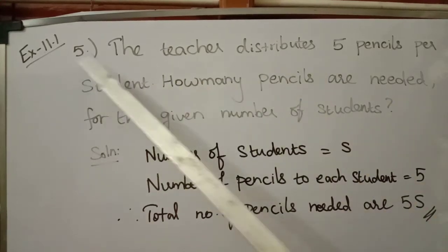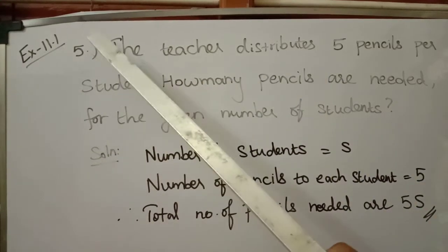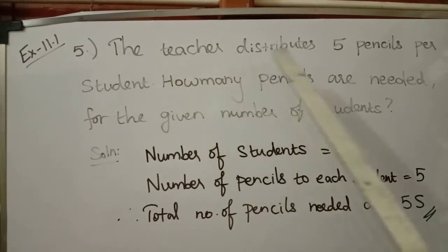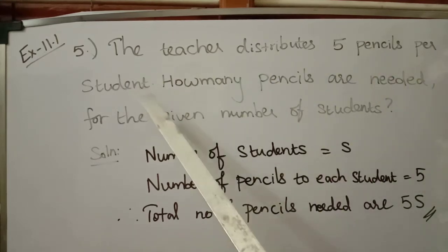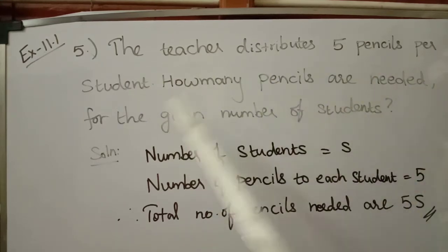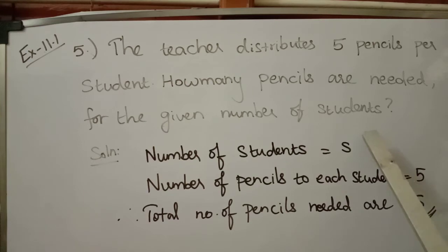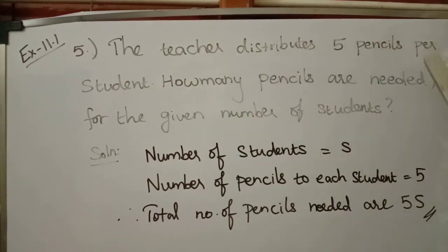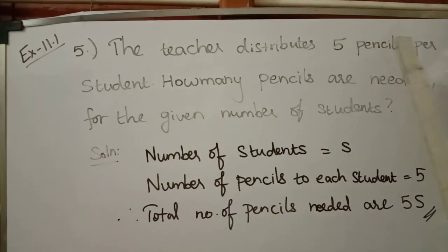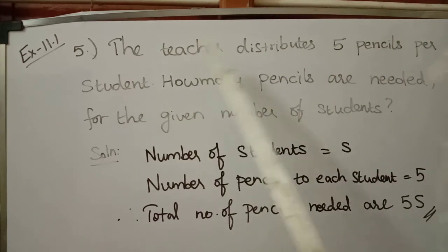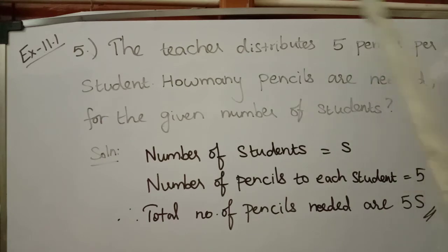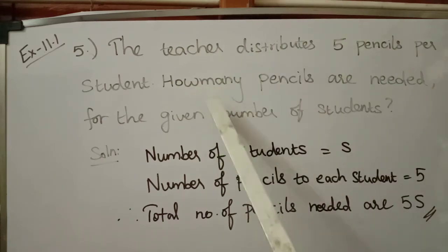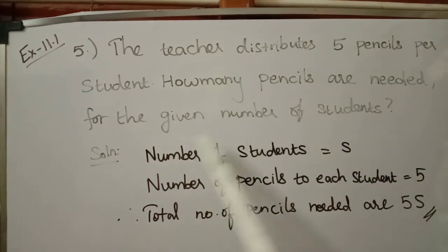Today we are going to see the fifth problem of Exercise 11.1. The teacher distributes five pencils per student. How many pencils are needed for the given number of students? So for one student, the teacher distributes five pencils. Our main question is how many pencils are needed for the given number of students.